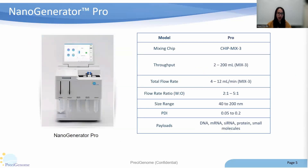Nanogenerator Pro has a throughput from 2 to 200 milliliters. This production range is suitable for discovery and early pre-clinical applications. Nanogenerator Pro is a fully integrated system. It contains two individual flow units with three standard syringe pumps, which provide precise control on total flow rate and flow rate ratio.